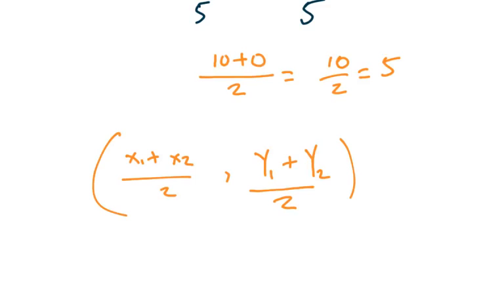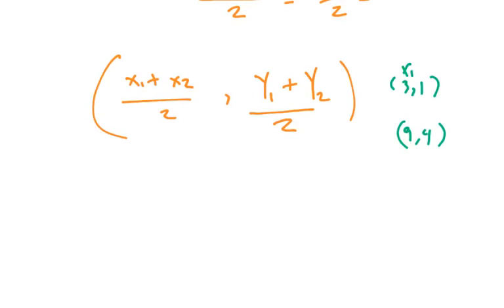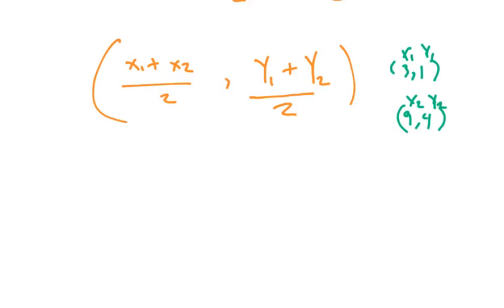So in our problem, let me rewrite the points that we have, 3,1 and 9,4. All you have to do, if this is x1, y1, x2, y2, and as we previously stated in the last video, label them x1, y1, x2, y2 not to make a mistake, is add your x's, add your y's, and divide by 2.